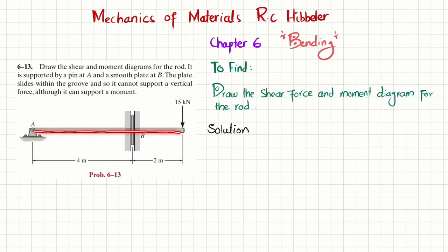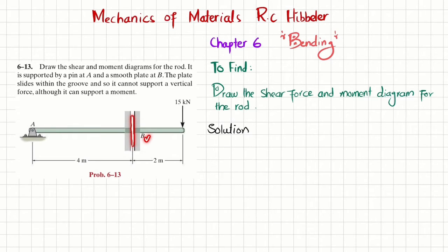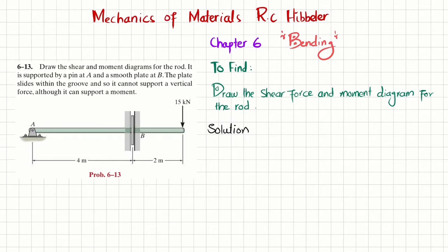You can see this is a rod that is acted upon by a load of 15 kilonewtons. At one end there is a pin support at point A, and at point B there is a plate which slides vertically and does not support a vertical force but supports a moment. We will solve this and draw the shear force and bending moment diagram.